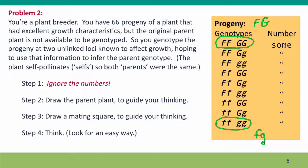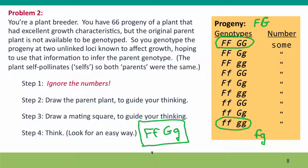What kind of genotype could produce both of these kinds of gametes? Only one parent genotype could do that. The parent would have to be big F, little f, big G, little g. So maybe that's our answer. The parent was heterozygous for both alleles. And we know that must have been the case because of the genotypes of the progeny that were produced — and we know that without even looking at the numbers, as long as we know there were some progeny that had these genotypes.